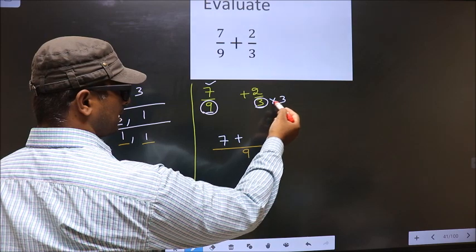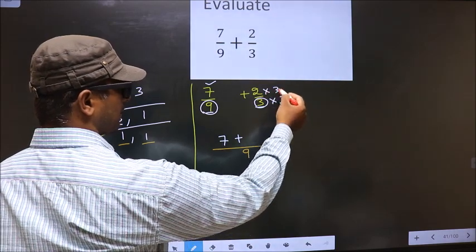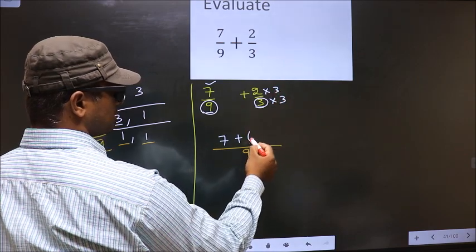Whatever number you are multiplying to the denominator, numerator also you should multiply by the same number. So 2 into 3 is 6.